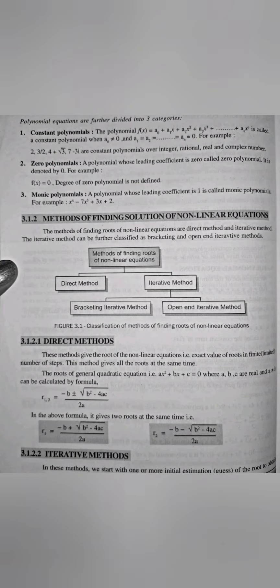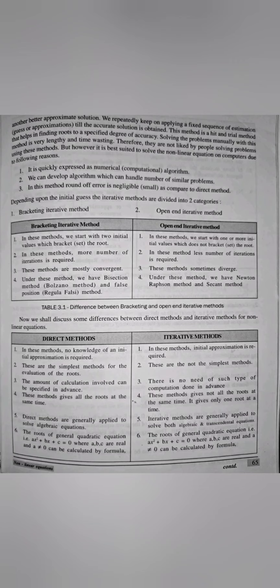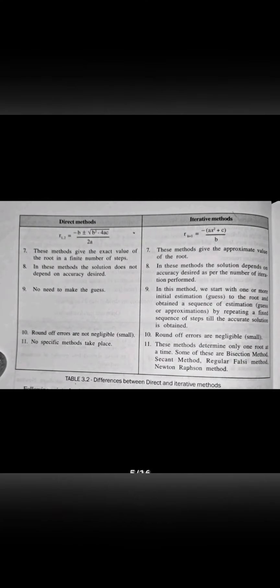The next chapter in your syllabus is Non-linear Equations. First, what are non-linear equations, and there are three types. What are the methods for finding solutions of non-linear equations? We have direct methods and iterative methods. Iterative methods are further of two types: bracketing methods and open-end methods. In bracketing, you have bisection and false position. In open-end, you have Newton-Raphson method. Then the difference between bracketing and open-end, and the difference between direct and iterative methods.